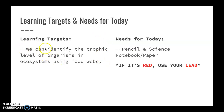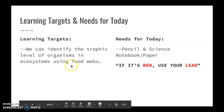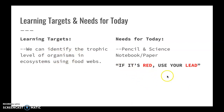Our learning target: we can identify the trophic levels of organisms in ecosystems using food webs. Today you'll want a pencil and paper again, and we're keeping our phrase alive — if it's red, use your lead. This is what we're going to learn how to do today: identifying trophic levels in ecosystems using food webs.